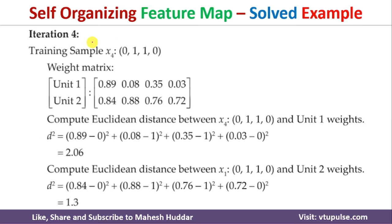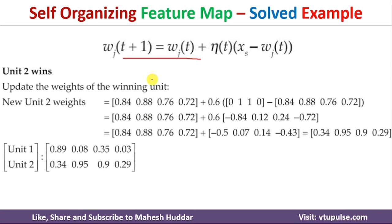In the fourth iteration, we consider X4 = [0,1,1,0]. The distance from X4 to unit 1 is 2.06, and to unit 2 is 1.3. Since 1.3 is the minimum, unit 2 wins this iteration. We update unit 2's weights accordingly, replacing the old weights with the new updated weights.